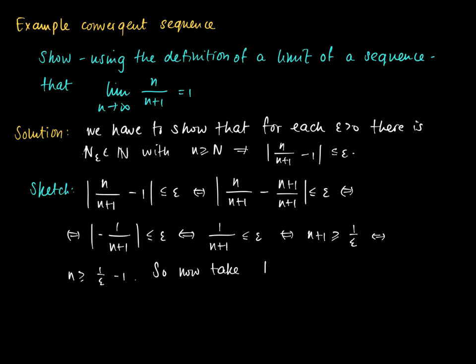So now take the capital N epsilon. We may define this as the ceiling of 1 over epsilon minus 1.